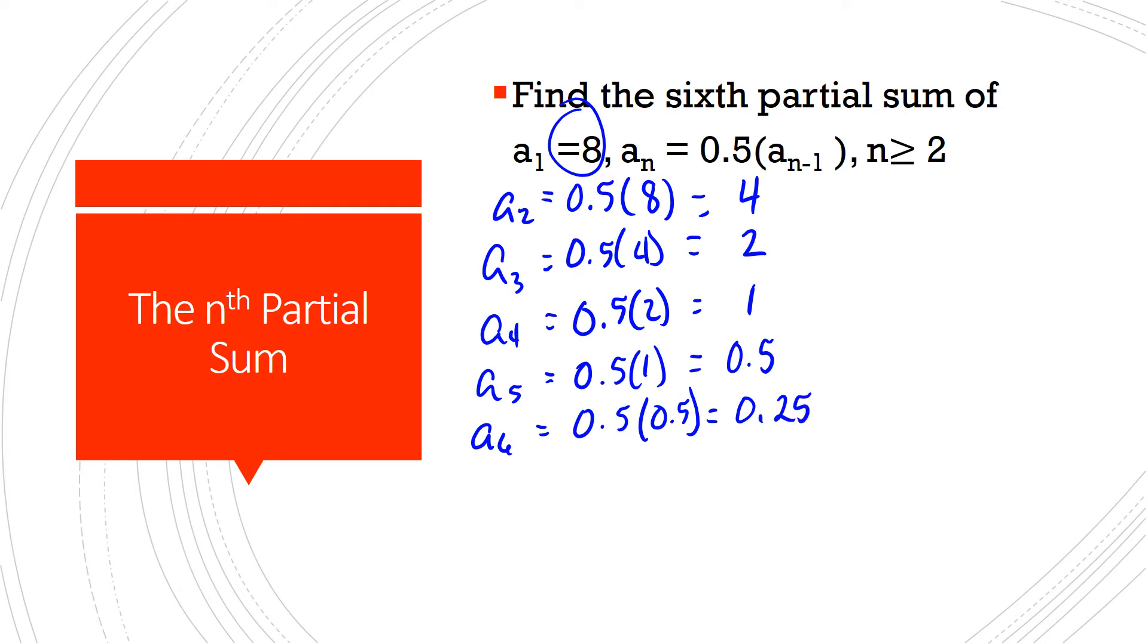So we have calculated the first six terms, and now we're just going to add those. So we've got 8, 4, 2, 1, 1 half, and 1 quarter. Maybe I should write it out: 8 plus 4, plus 2, plus 1, plus 0.5, plus 0.25.